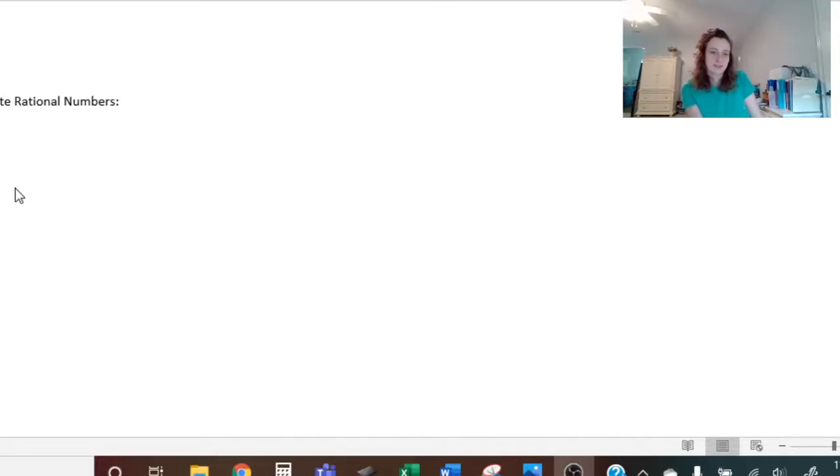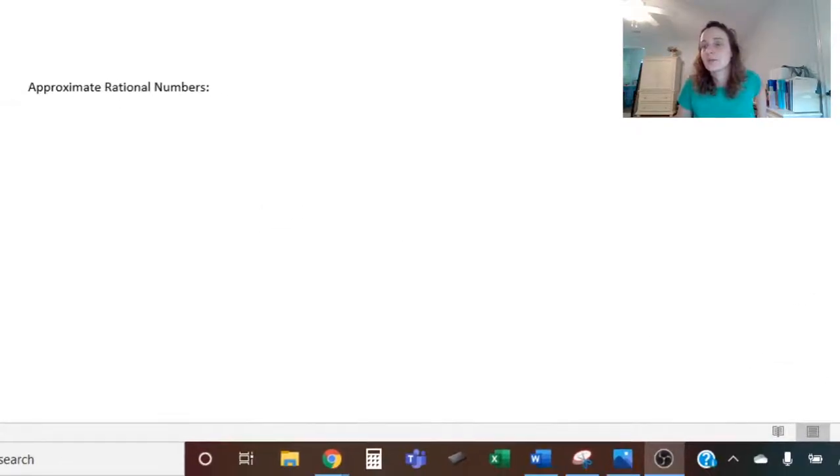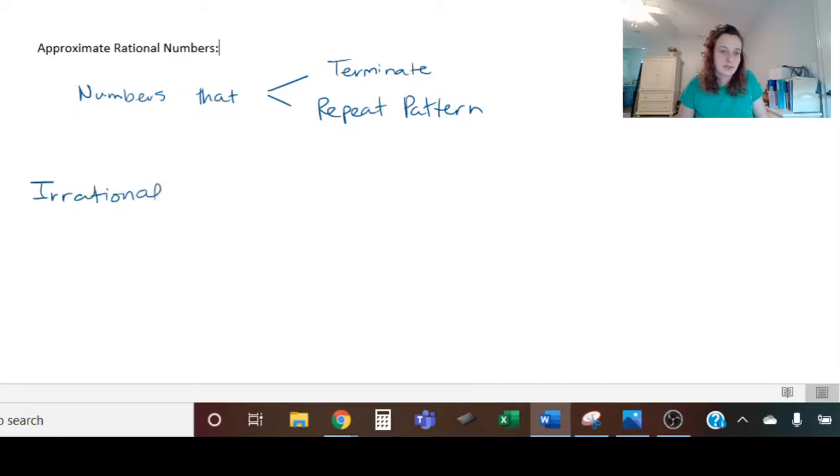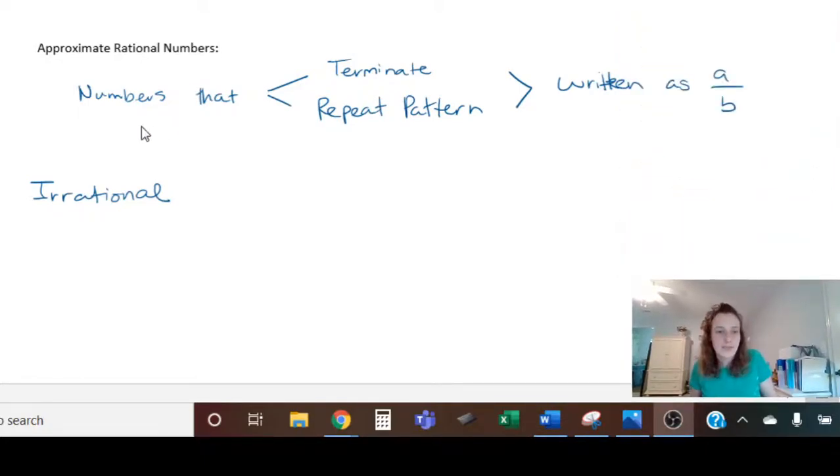Alright, so let's get started here. I'm going to approximate rational numbers. So let's recall - what are rational numbers? Rational numbers are numbers that either terminate, which means that the decimal ends, or they repeat in a pattern. Numbers that terminate or repeat in a pattern can be written as a fraction A over B.